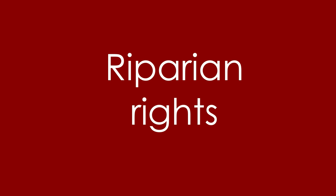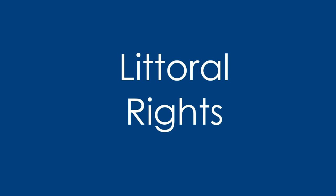Riparian rights are rights an owner would have when they live alongside moving bodies of water, such as a river or a stream. Littoral rights are rights somebody would have when they live by a static body of water, such as a lake, a sea, or an ocean.